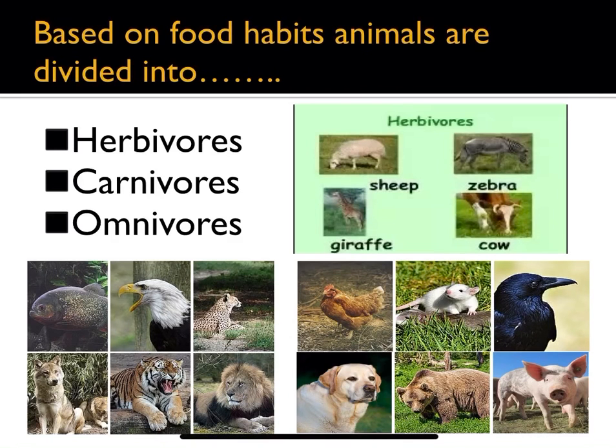Animals show a variety in their food and feeding habits. Based on the food they eat, animals are divided into three types: the first is herbivores, the second is carnivores, and the third is omnivores.